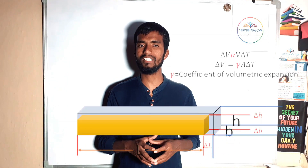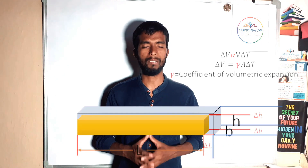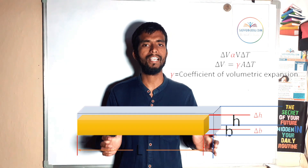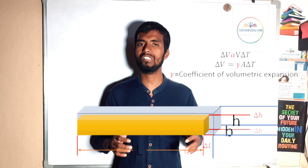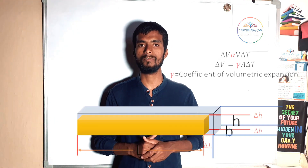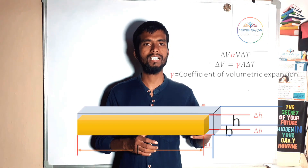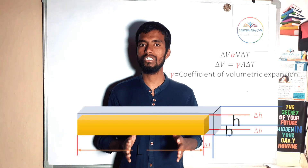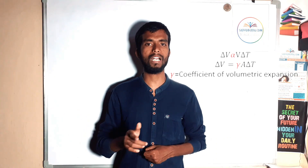Now let us discuss volumetric expansion. Consider the same rectangular block. If this block is subjected to heat and there is a change in all three dimensions — length, breadth, and height — this type of expansion is known as volumetric expansion. Here, delta V, the change in volume, is directly proportional to the original volume and the change in temperature. To remove this proportionality, we introduce a constant gamma, which is known as the coefficient of volumetric expansion.